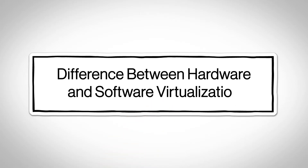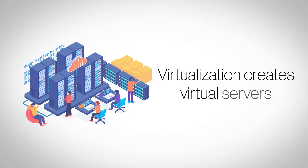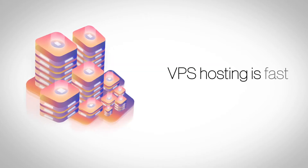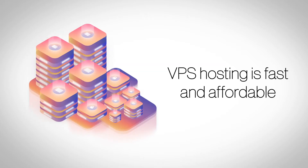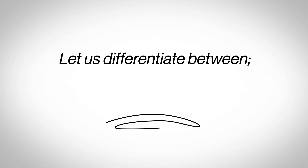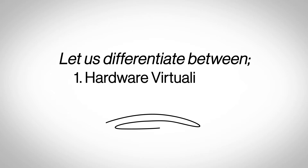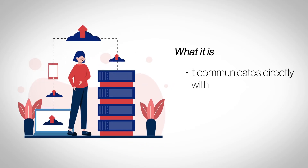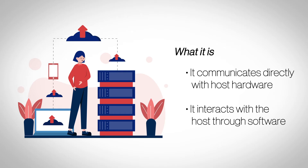In hosting, virtualization divides a physical server into numerous standalone virtual servers, enabling VPS — one of the fastest and most affordable hosting platforms. There are two main types of virtualization: hardware virtualization and software virtualization. Hardware virtualization uses a hardware layer called a hypervisor to achieve virtual isolation, while software virtualization creates virtual servers using a system software such as its operating system.